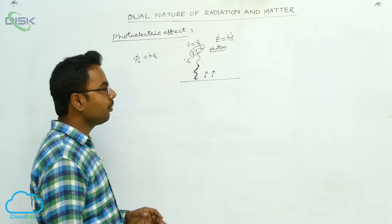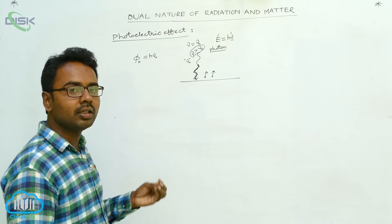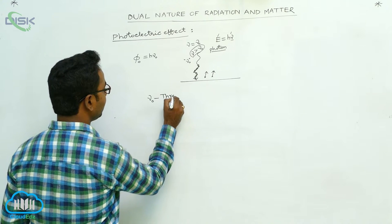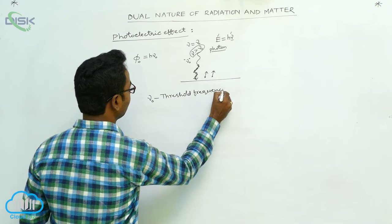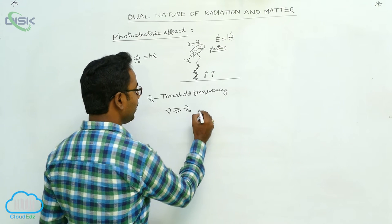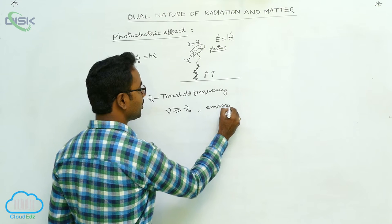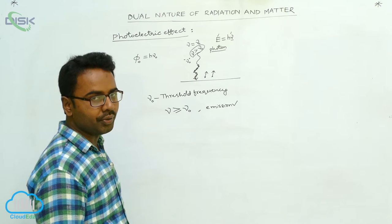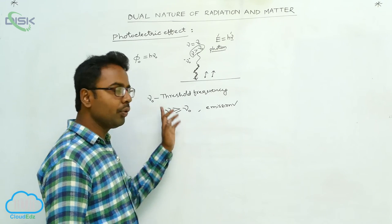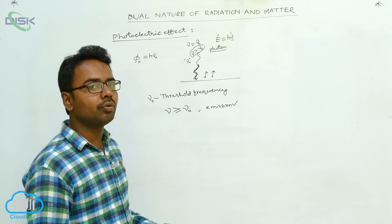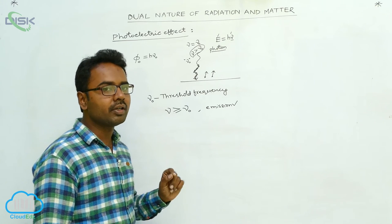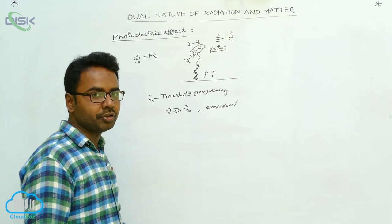The minimum frequency ν₀ of the incident radiation is called the threshold frequency. Whenever the frequency of incident radiation is greater than or equal to the threshold frequency, photoelectric emission is possible. If ν equals ν₀, the electron just comes out from the metal surface with no kinetic energy. The threshold frequency is defined as the minimum frequency of the incident radiation below which photoelectric emission is not possible.